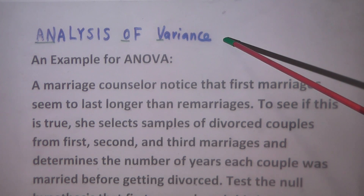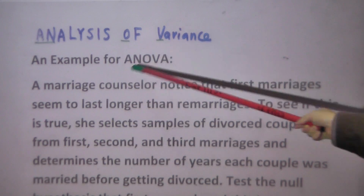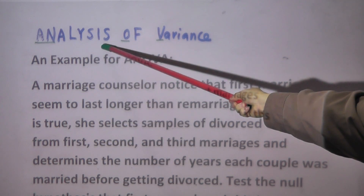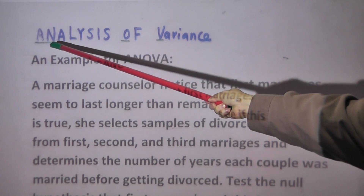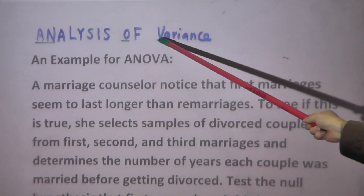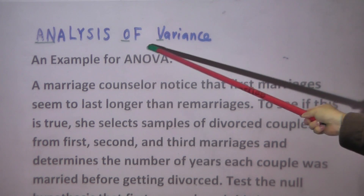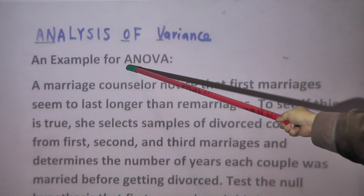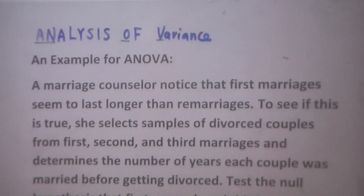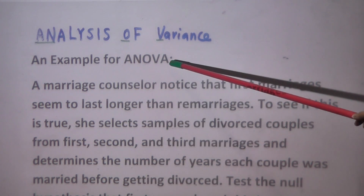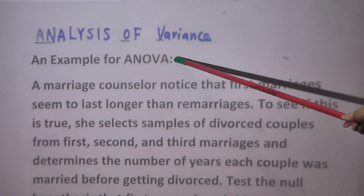We now introduce ANOVA. ANOVA is an abbreviation of Analysis of Variance. To understand what ANOVA is, let's look at an example first.